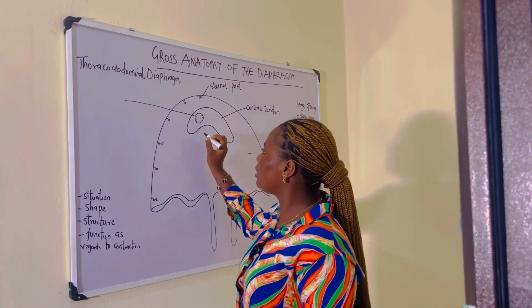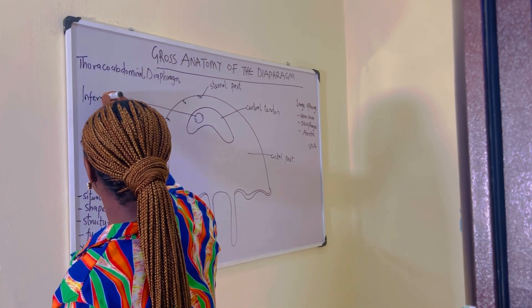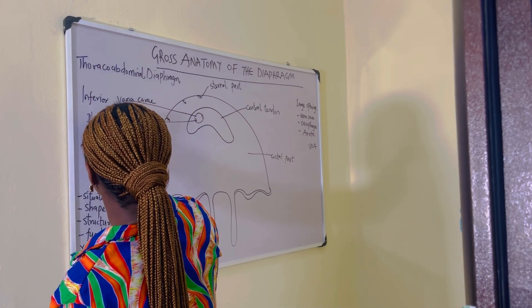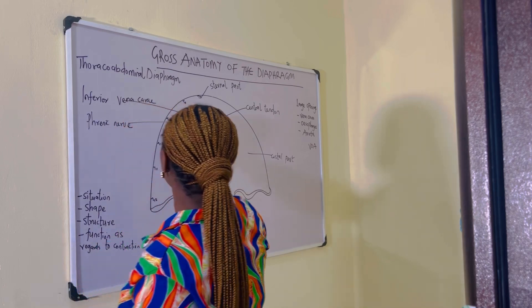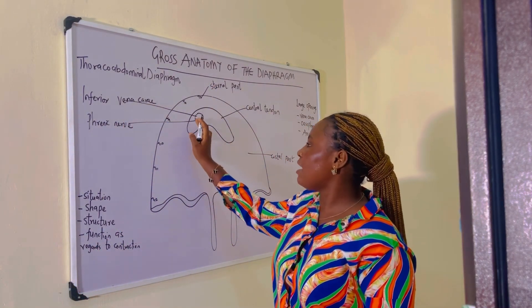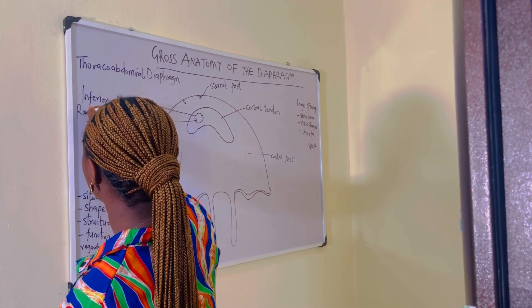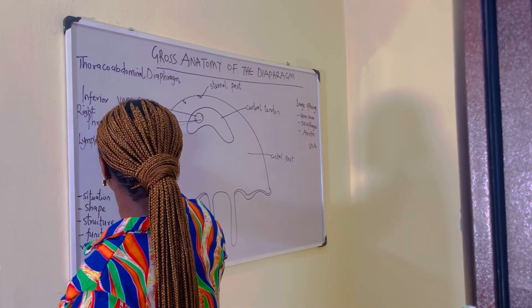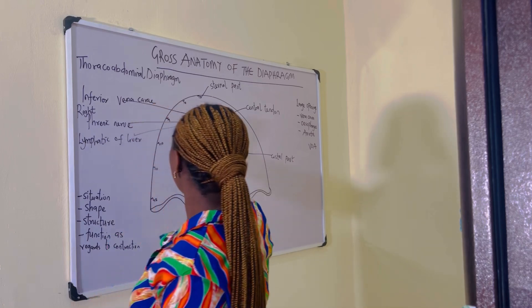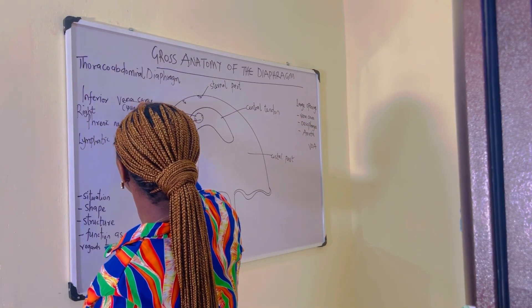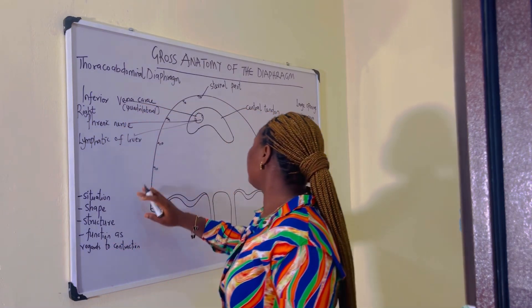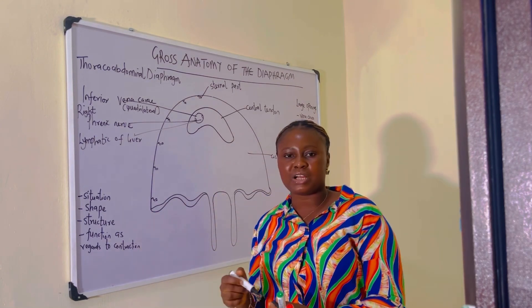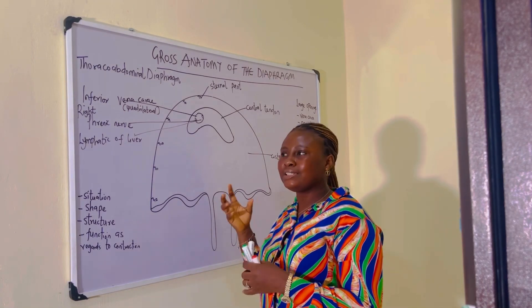The structures that pass through the vena cava opening include: the inferior vena cava, the right phrenic nerve, and the lymphatics of the liver. The shape is quadrilateral. As regards to its function during contraction, the vena cava opening results in dilatation of the diaphragm.